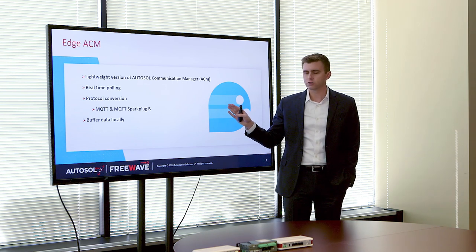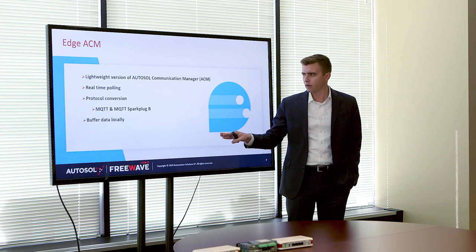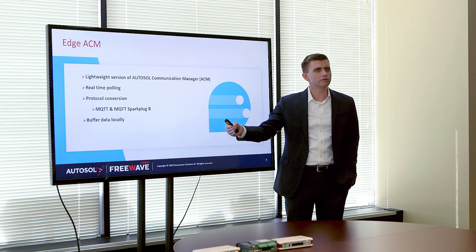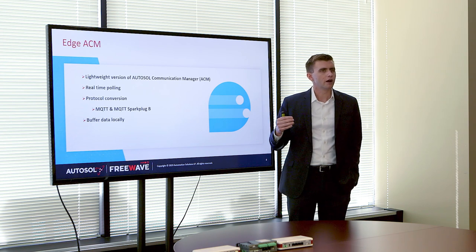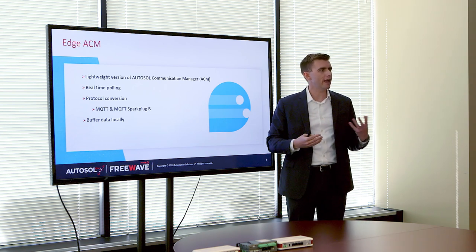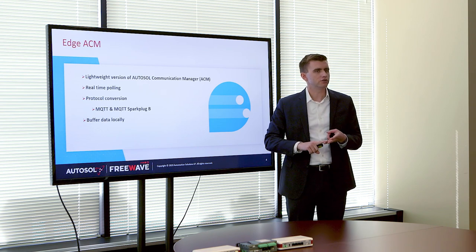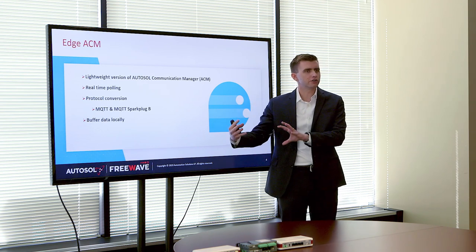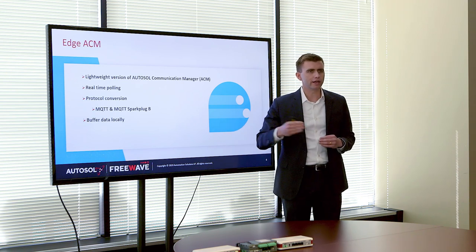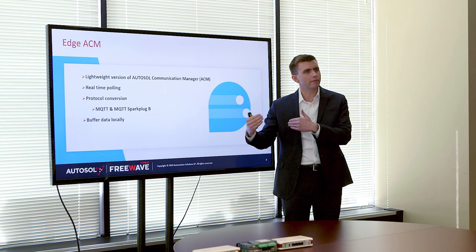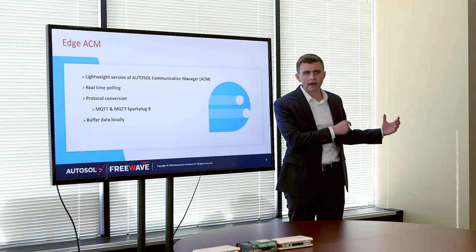Edge ACM does real-time polling of a number of protocols. It converts data from whatever protocol it is to MQTT or MQTT SparkplugB, allowing the user to innovate how they handle it with dead bands, with some edge alarming, as well as being able to put registers or tags in different tag groups and have those poll at different rates for more high-resolution data on what matters.